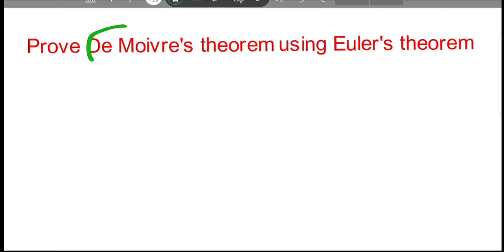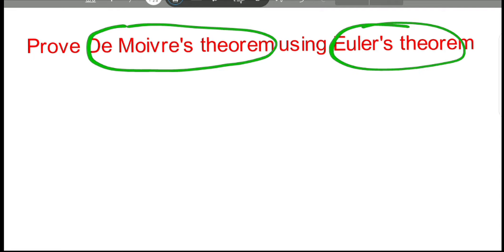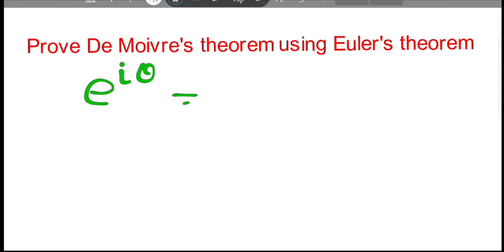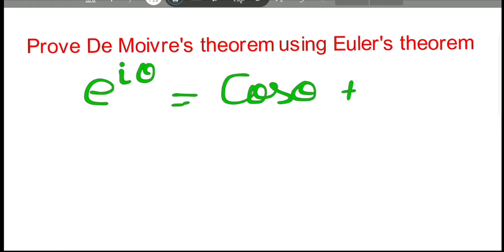Let's prove De Moivre's theorem using Euler's theorem. Euler's theorem states: e to the power i theta equals cos theta plus i sine theta.